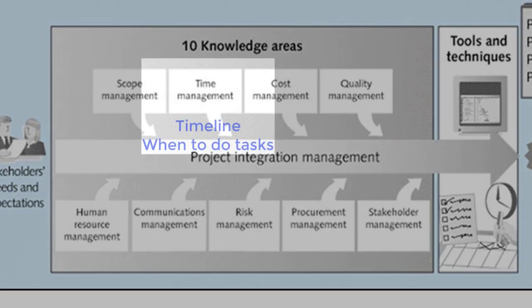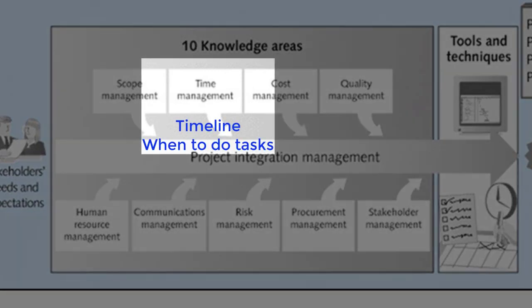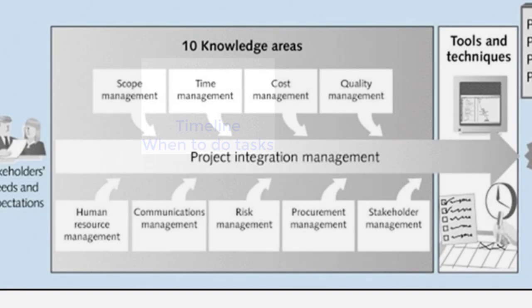Time management is mainly about figuring out when tasks and activities need to be done and in what order, then keeping the project on track. For example, in the renovation you would need to uninstall the old kitchen before installing the new one.